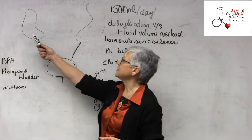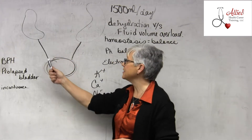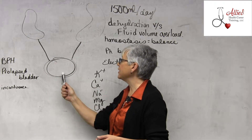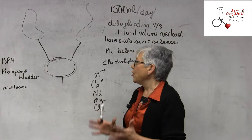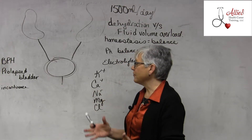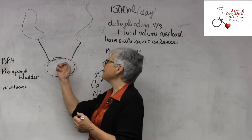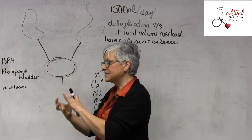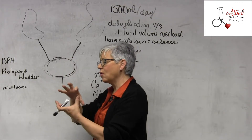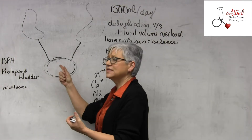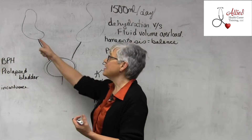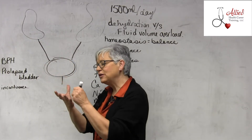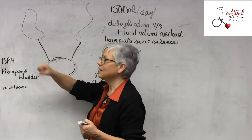Let's look at the structures: we have the kidneys, then the ureters — one for each kidney — then the bladder, and then the urethra. Problems that can arise include cystitis, which is an inflammation or infection of the bladder — a hollow holding structure. Nephritis is a kidney infection, an infection of the nephrons inside the kidneys.